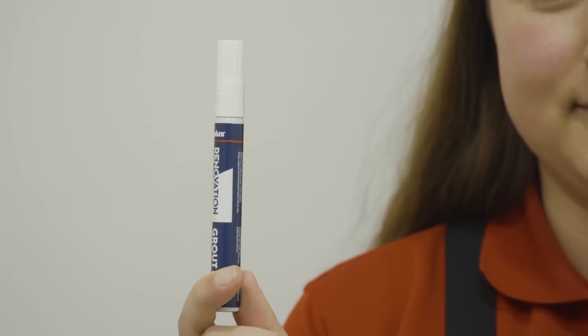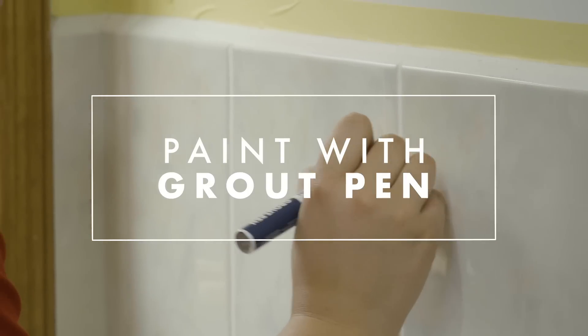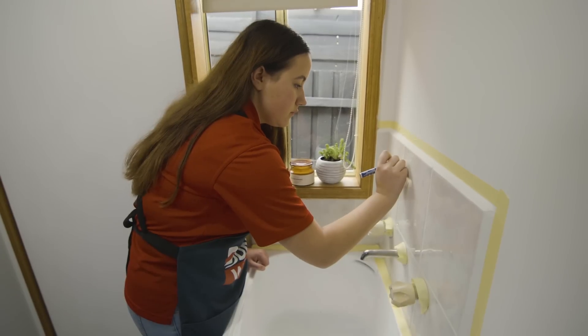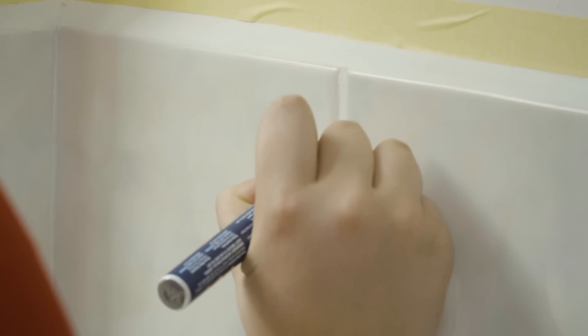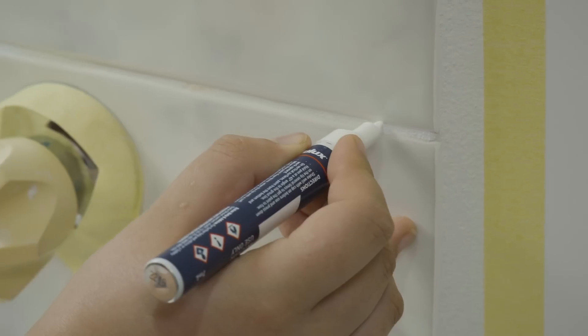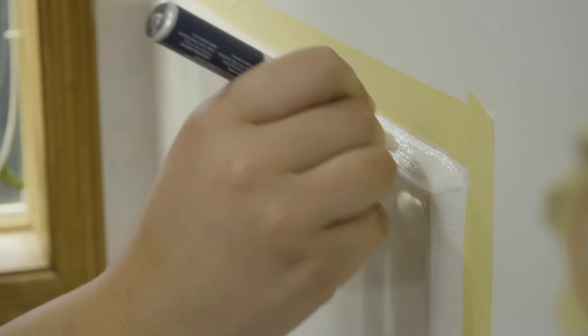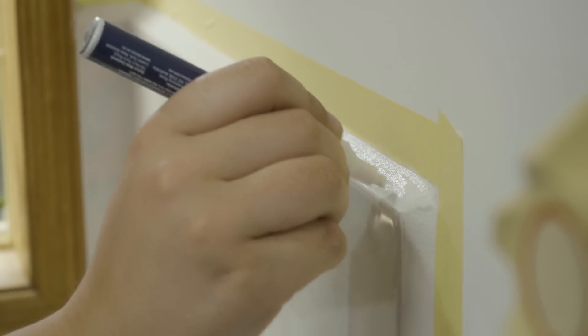My grout pen is my secret weapon. Just like a pen, go over your existing grout lines to re-whiten them and really make your tiles pop. It's touch dry in 30 minutes, but if you need to give them a second coat, wait one hour before reapplying.